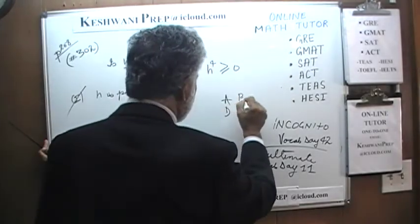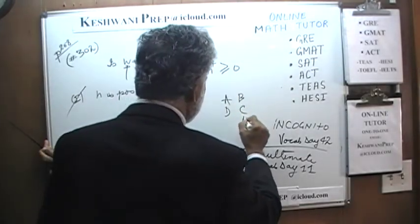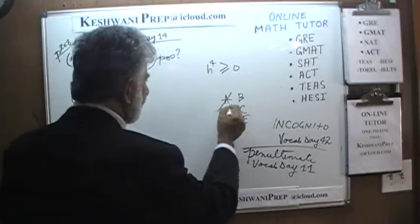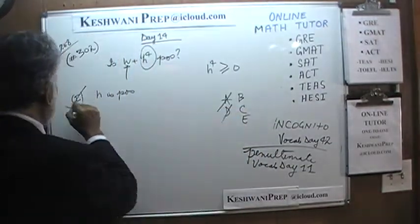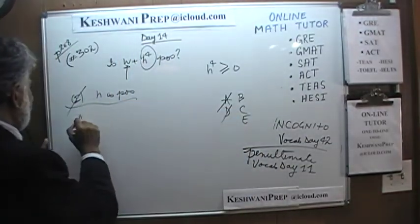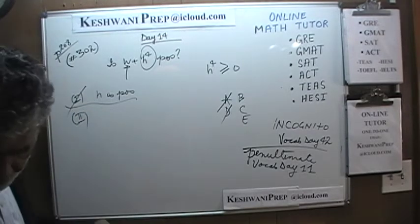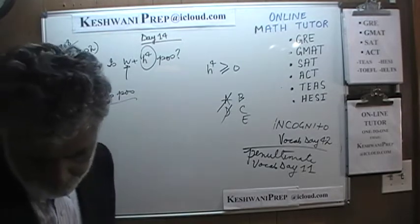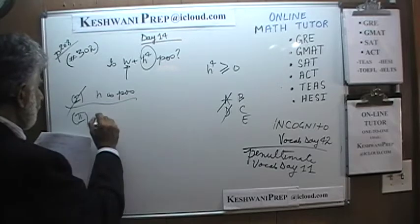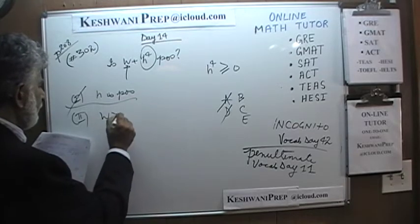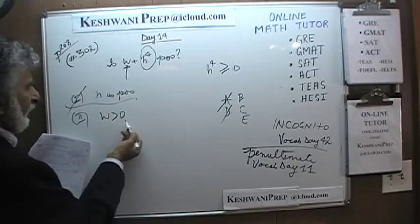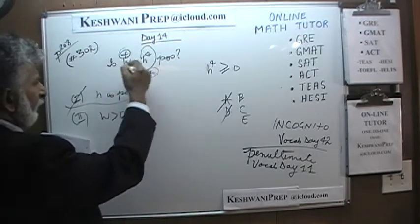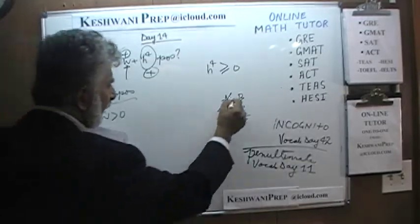Going through the answer choices A, D, B, C, E — the first statement by itself is worthless. The answer cannot be A or D. The second statement tells us that w is positive. If w is positive, then w plus h⁴ is positive — we already know h⁴ is positive. The whole thing is positive. The answer is B.